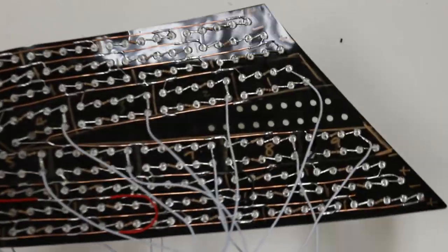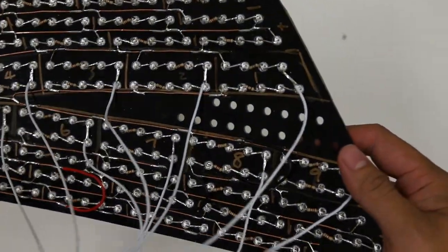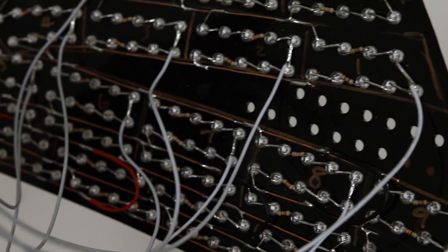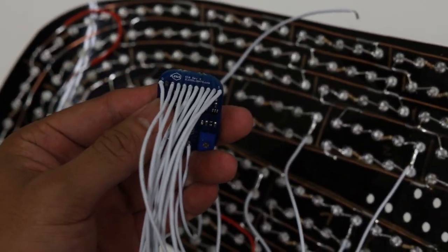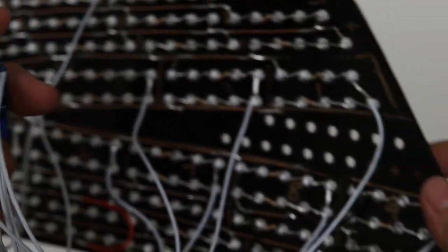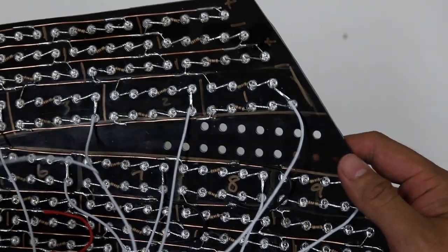This is what the back of the panel will look like after all the wiring is done. As you can see, we matched the module sequence to the groupings on the back of the panels.